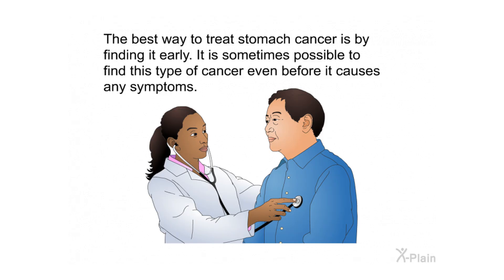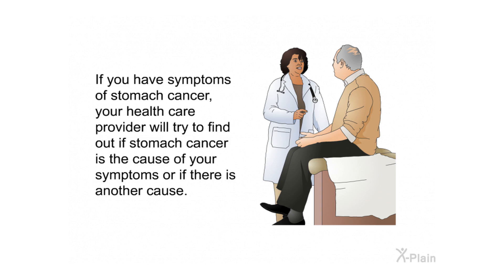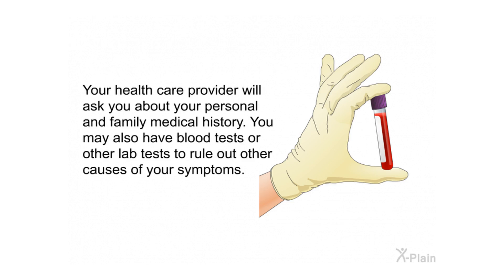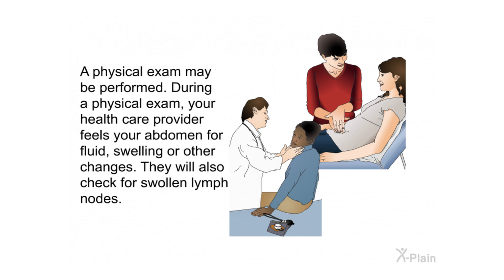The best way to treat stomach cancer is by finding it early — sometimes before it causes any symptoms. Your health care provider will ask about your personal and family medical history and may order blood or lab tests to rule out other causes. A physical exam may also be performed, during which your provider will feel your abdomen for fluid, swelling, or other changes, and check for swollen lymph nodes.